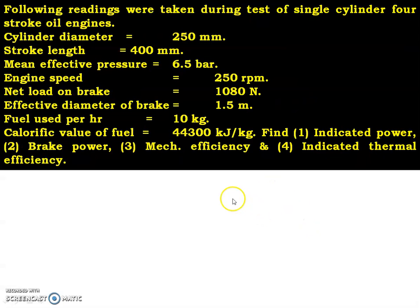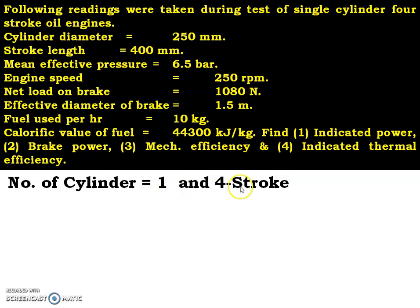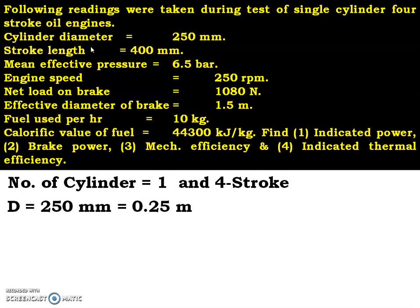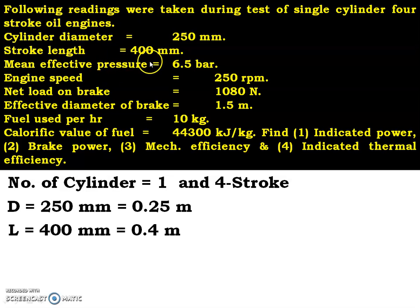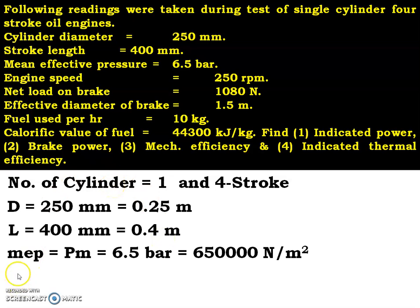Now let us see what data they have given. Number of cylinders: 1, and it is a 4-stroke engine. Cylinder diameter D = 250 mm, converting into meters: 0.25 m. Stroke length L = 400 mm, that is 0.4 m. Mean effective pressure MEP or PM = 6.5 bar, converting bar into Pascal: 6.5 × 10⁵ N/m².